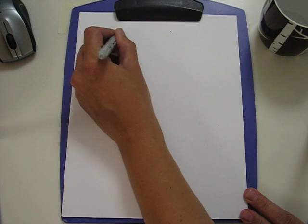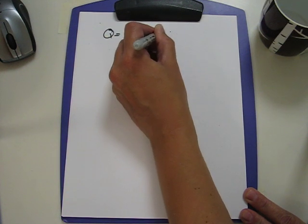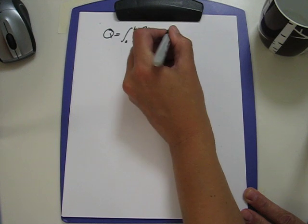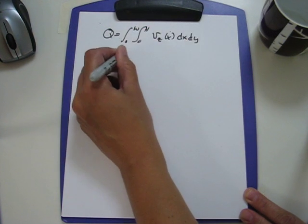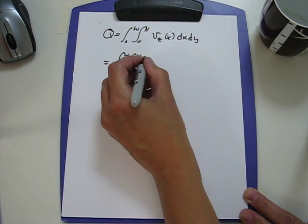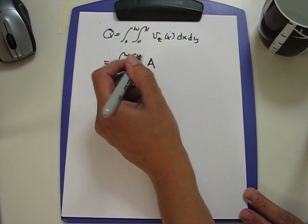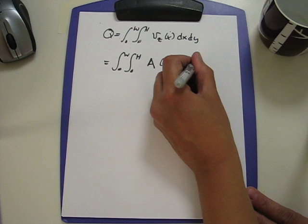To carry it out, we copy that equation: Q equals the integral from 0 to w, integral from 0 to h of vz dx dy. And we include now the velocity profile, which was a whole bunch of constants, which I'll call A times h squared minus x squared dx dy.